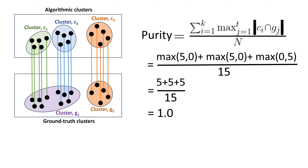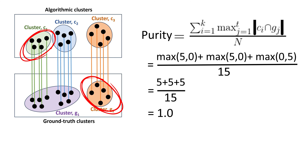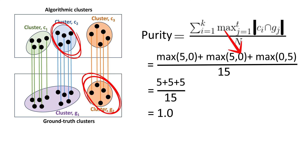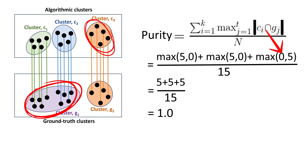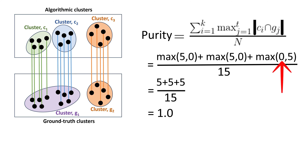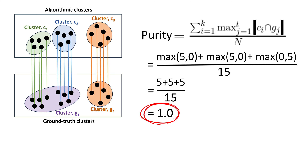Let's apply the formula to verify. The intersection of C1 and G1 is 5; intersection of C1 and G2 is 0 — max is 5. Intersection of C2 and G1 is 5; intersection of C2 and G2 is 0 — max is 5. Intersection of C3 and G1 is 0; intersection of C3 and G2 is 5 — max is 5. The numerator is 5 plus 5 plus 5 equals 15. The denominator is 15 total points. Therefore 15 divided by 15 equals 1.0 — purity is 1.0 even though the clusters do not exactly match.